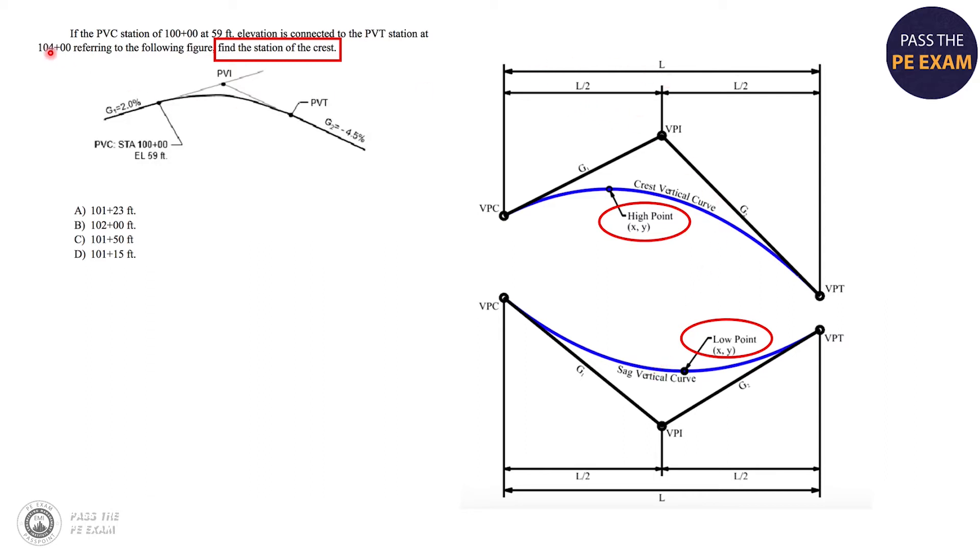What's going to happen is they're going to assume that and they're going to say, well, we know the length of this curve, which is 104 minus 100, which is four. So L over two equals two. And if we take the PVC station of 100 and we add two to it, our answer is B, 102.